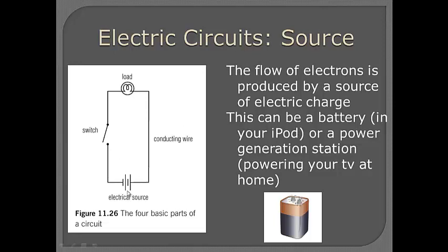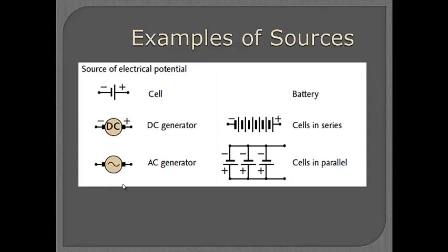Our source in this case is shown as a typical battery, where the long side is your positive terminal and the short side is your negative terminal. Here's some examples of some symbols that we use for sources. Battery is usually made up of a bunch of cells in series. It can also be cells in parallel. There's an AC generator that stands for alternating current, which we'll talk about later, and DC generator, which stands for direct current. DC batteries produce DC. Hydro produces AC.